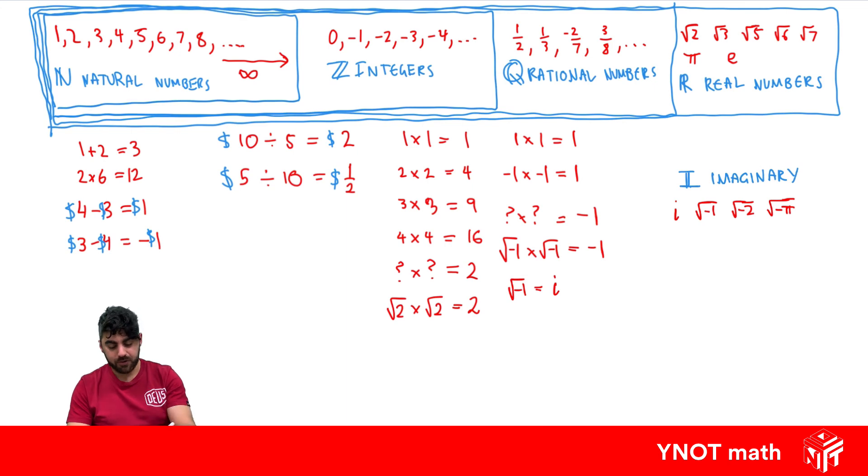And when we draw our box now, the imaginary box is on its own. Because none of these numbers are imaginary numbers. But for example, integers is also rational and also real. But imaginary is just on its own.